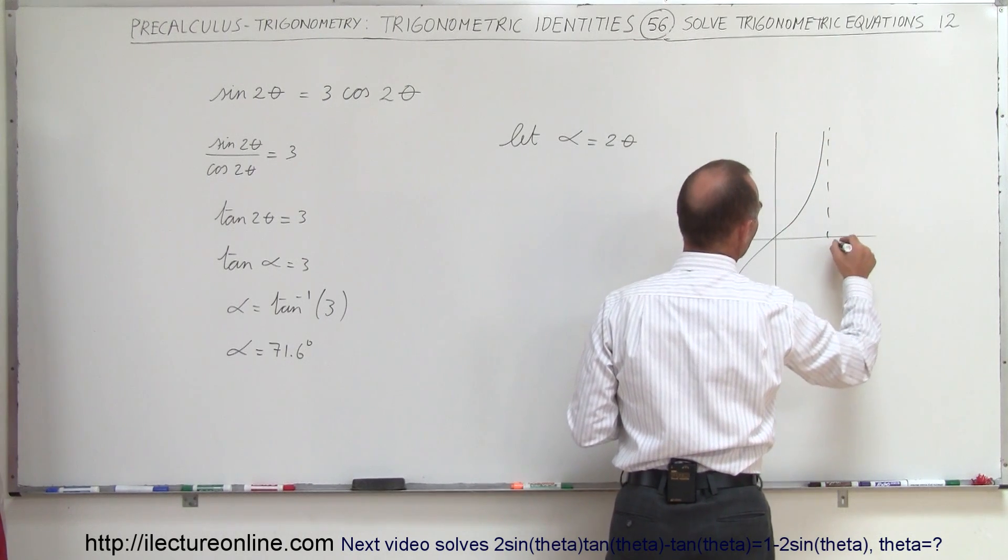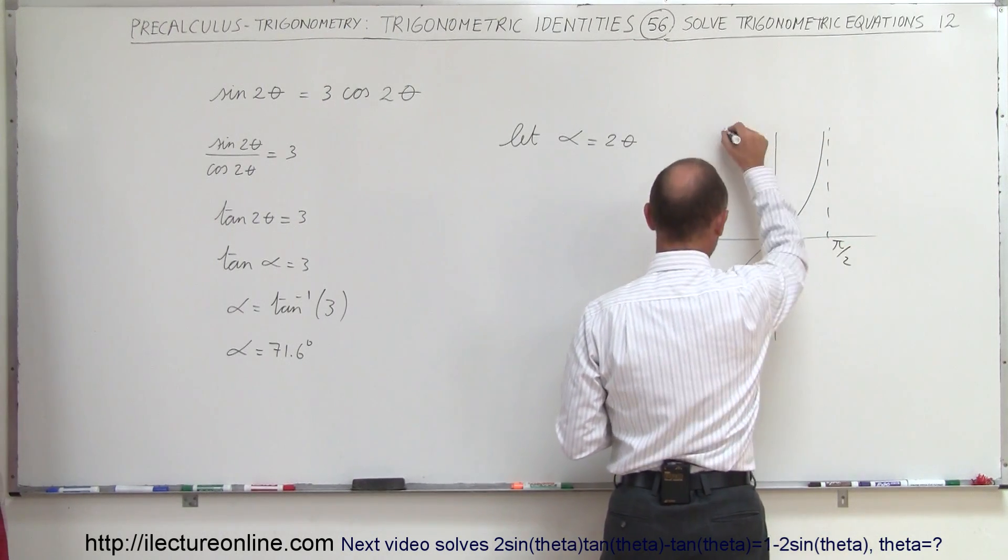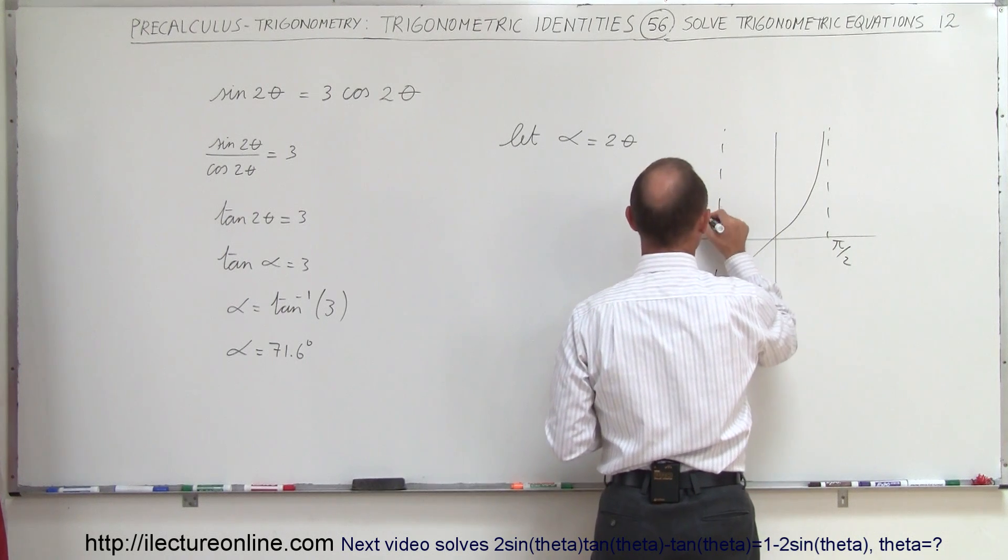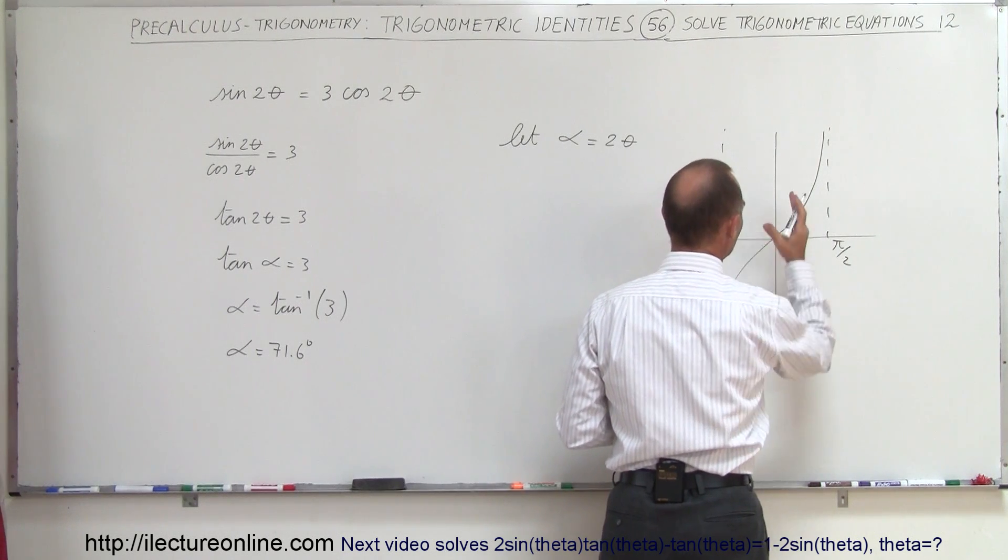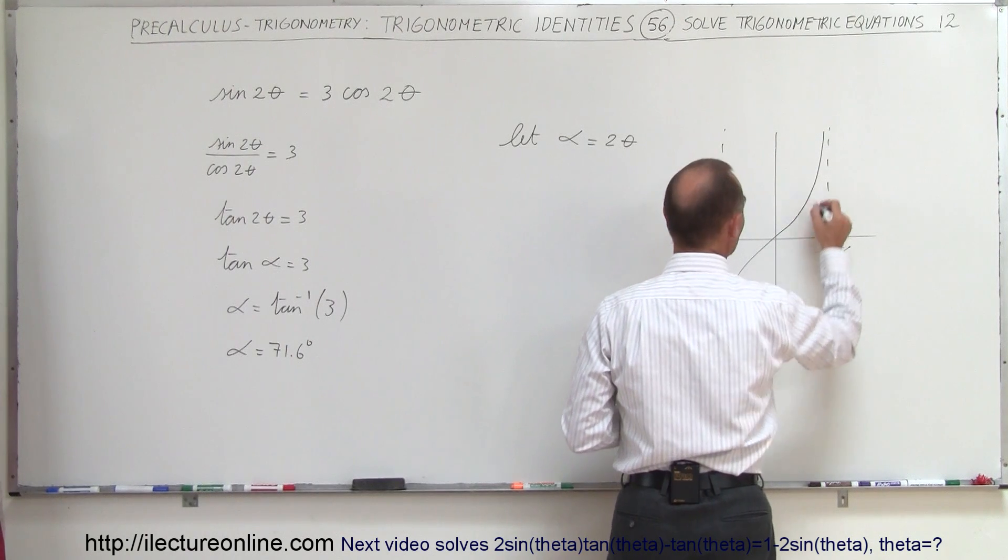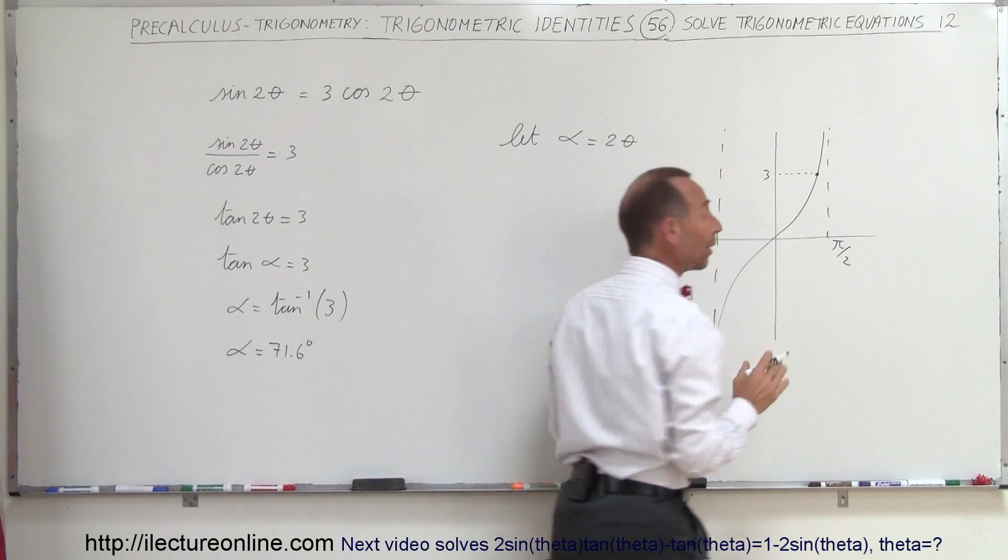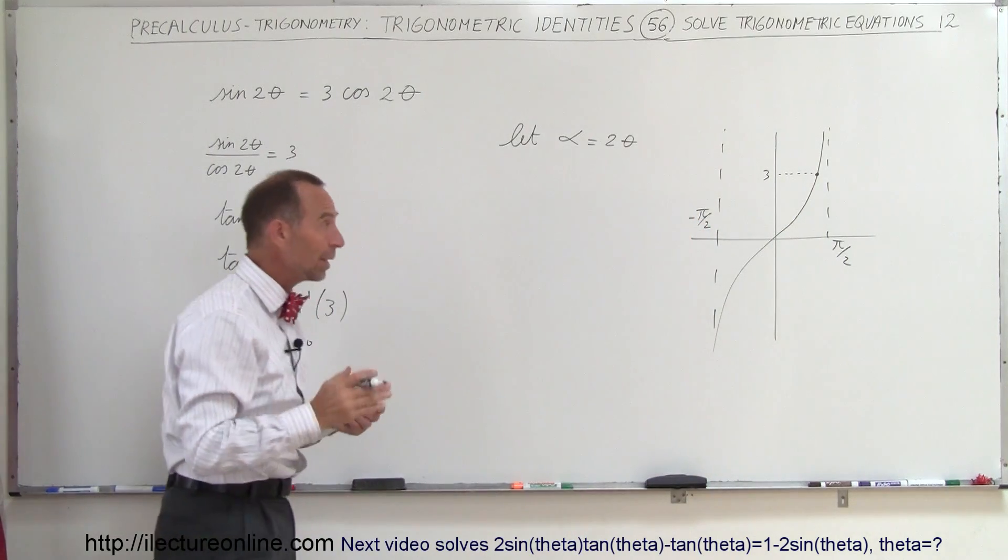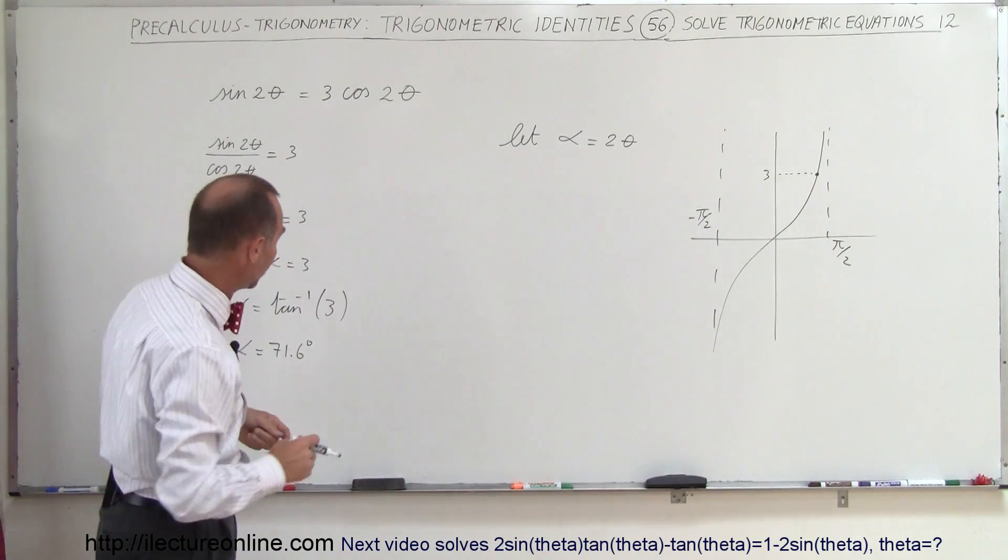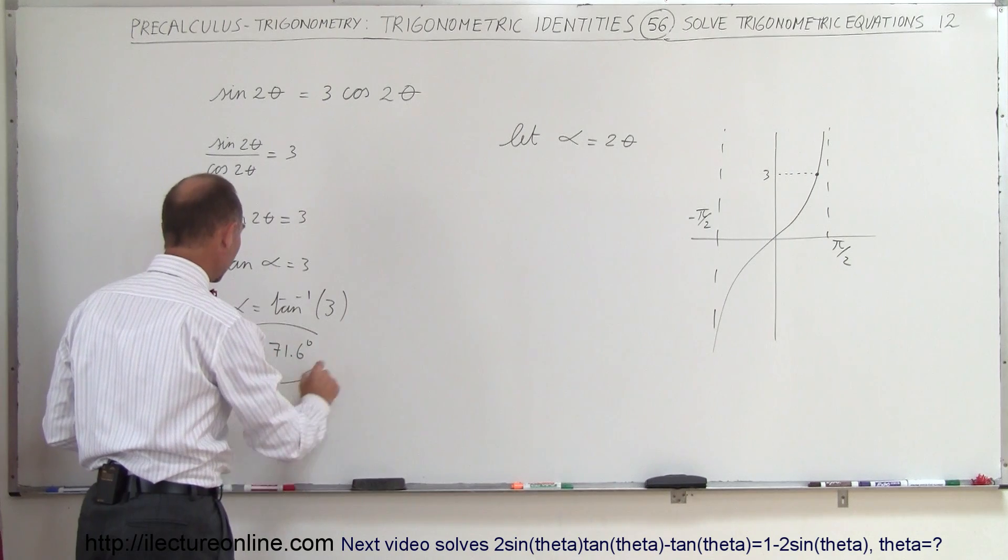And so we have an asymptote here at π over 2 and another asymptote here at negative π over 2. We're looking for the value so that it equals 3, which would be right about here. Notice there's only one place where that happens between negative π over 2 and π over 2. So this is indeed the only proper answer.